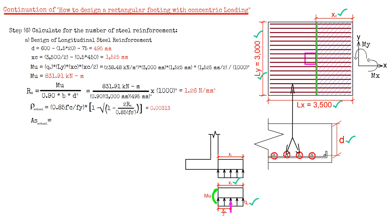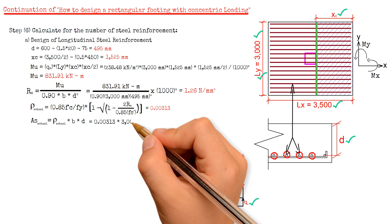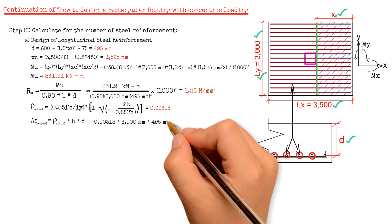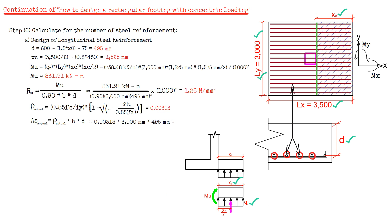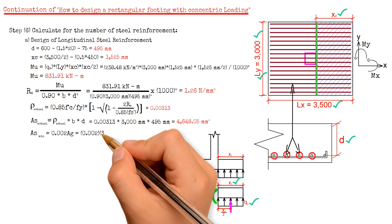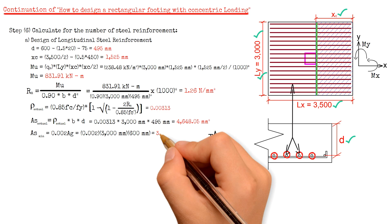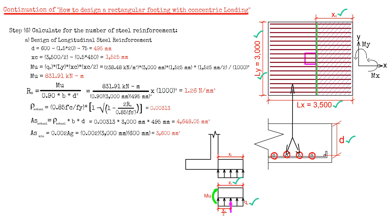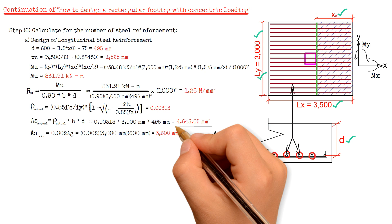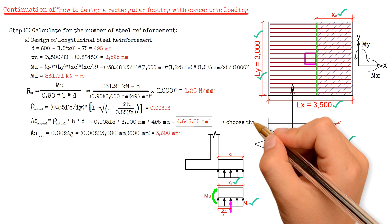To solve for the area of steel, we multiply the actual steel ratio 0.00313 by the width B 3000 mm, times the effective depth D 495 mm, giving us 4,648.05 square millimeters. We also calculate the minimum area of steel at 0.2% of the gross area: 0.002 times 3000 mm times 600 mm, resulting in 3,600 square millimeters. We choose the larger value, which is the required area of steel at 4,648.05 square millimeters.